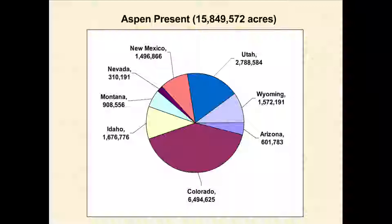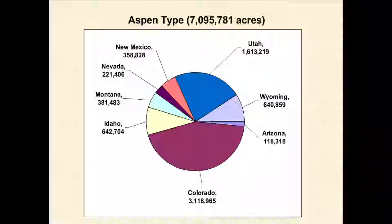How it breaks out by state: Aspen is by far dominated by Colorado, with Utah a distant second. What's interesting is that the distribution of Aspen present versus Aspen as a dominant type changes a bit — Utah and Colorado end up with a relatively bigger piece of the pie, while New Mexico and Arizona lose a large proportion of Aspen acreage when you restrict it to an Aspen-dominant type.